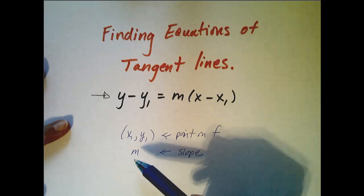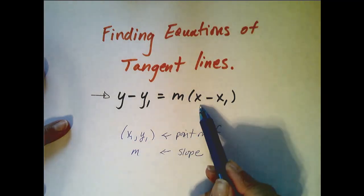So if you know the slope and you know a point on the line, you can find the equation of a line.